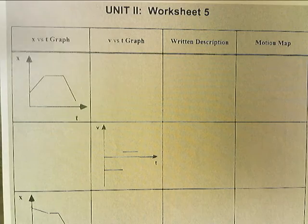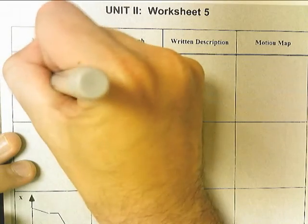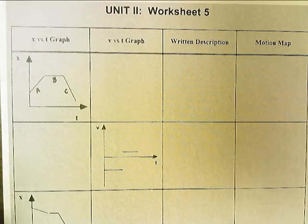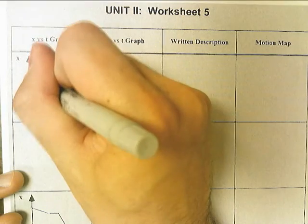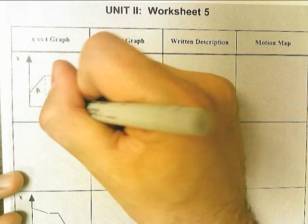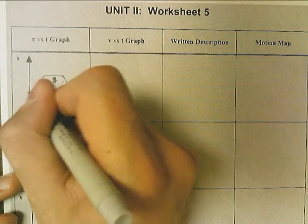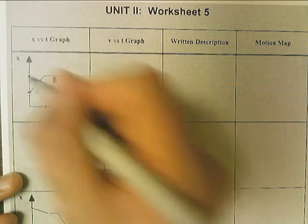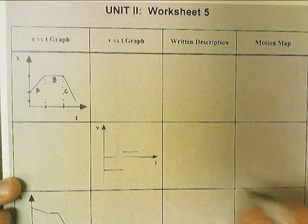You'll notice that there are no numbers on this first graph. A good strategy is to label the legs. Another strategy is to mark the changes. Here's a change, here's a change, and here's another change, and that may help you with your translation activity.